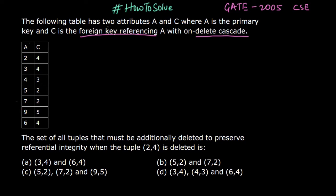The following table has two attributes A and C where A is the primary key and C is the foreign key referencing A with on-delete cascade. This C is basically a foreign key which is referencing to A in the same table.